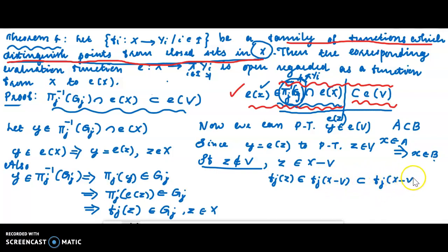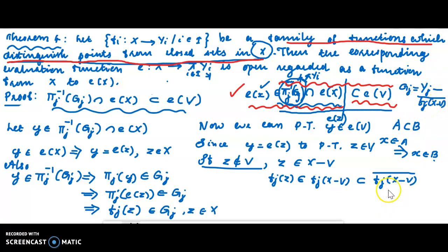So how did we do it? We will write the definition of G_j. G_j is equal to Y_j minus the closure of f_j of X minus V. Then f_j of X minus V, called closure. This is equal to Y_j minus G_j, and f_j of X minus V. If Z is not an element of V.